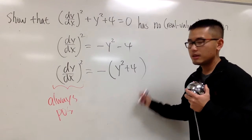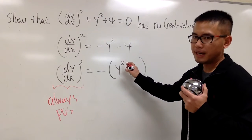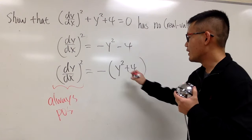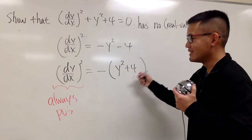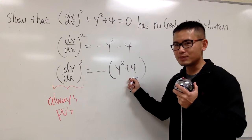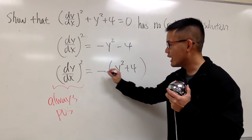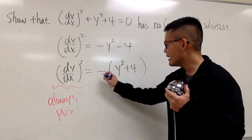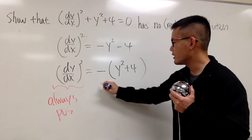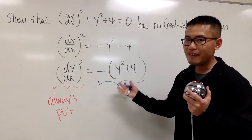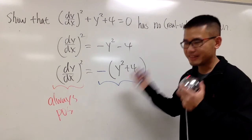However, if you look at this carefully, y-square is always positive, and 4 is just 4. And when you have positive plus 4, this is always positive as well. However, you have this negative in the front. This right here makes everything always negative.